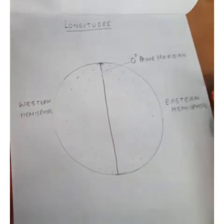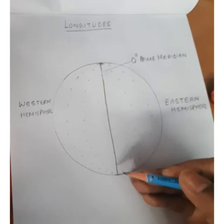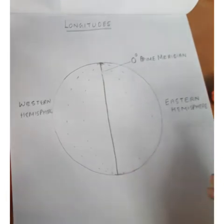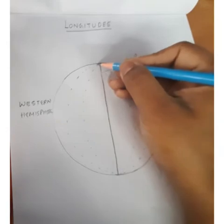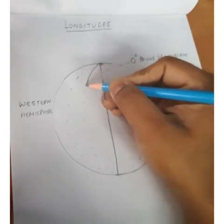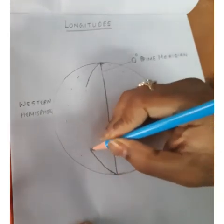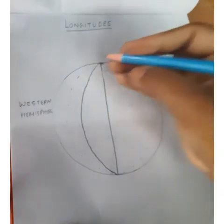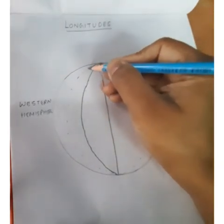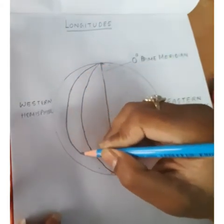As you know, there are a total of 360 longitudes, and it is not possible to draw all of them on paper. These are curved lines which meet at the poles — the north pole and the south pole. So we need to draw curved lines like this, and you can see these curved lines are meeting at the poles.